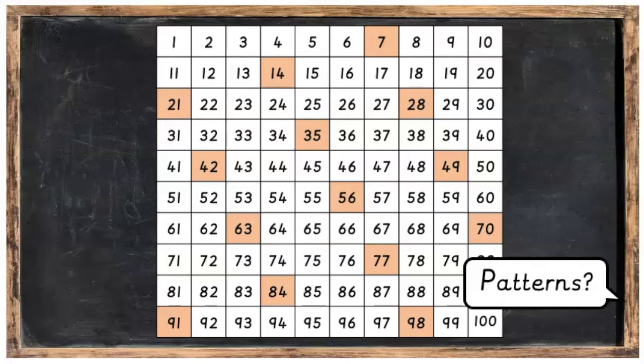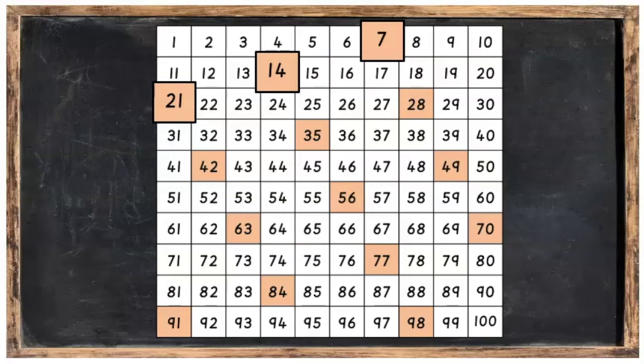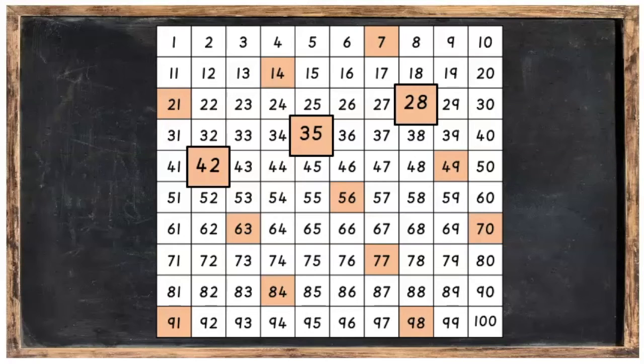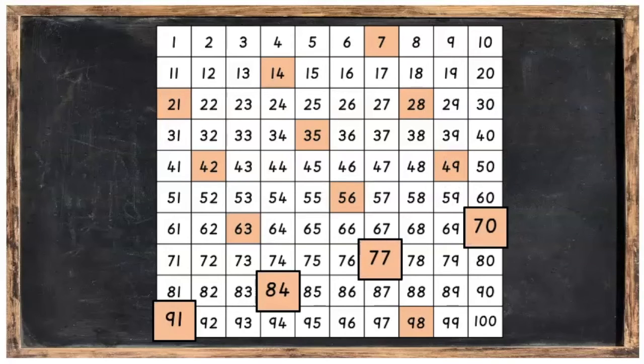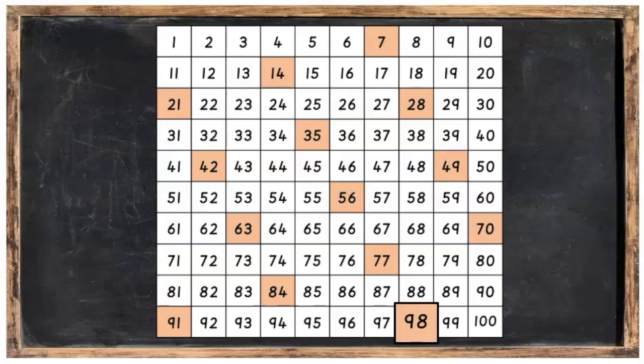Can you see any patterns with the numbers we have landed on? You might notice how they jump at an angle. So we have seven, fourteen, and twenty-one. And then twenty-eight, thirty-five, and forty-two. Forty-nine, fifty-six, sixty-three. Seventy, seventy-seven, eighty-four, ninety-one, and the ninety-eight.